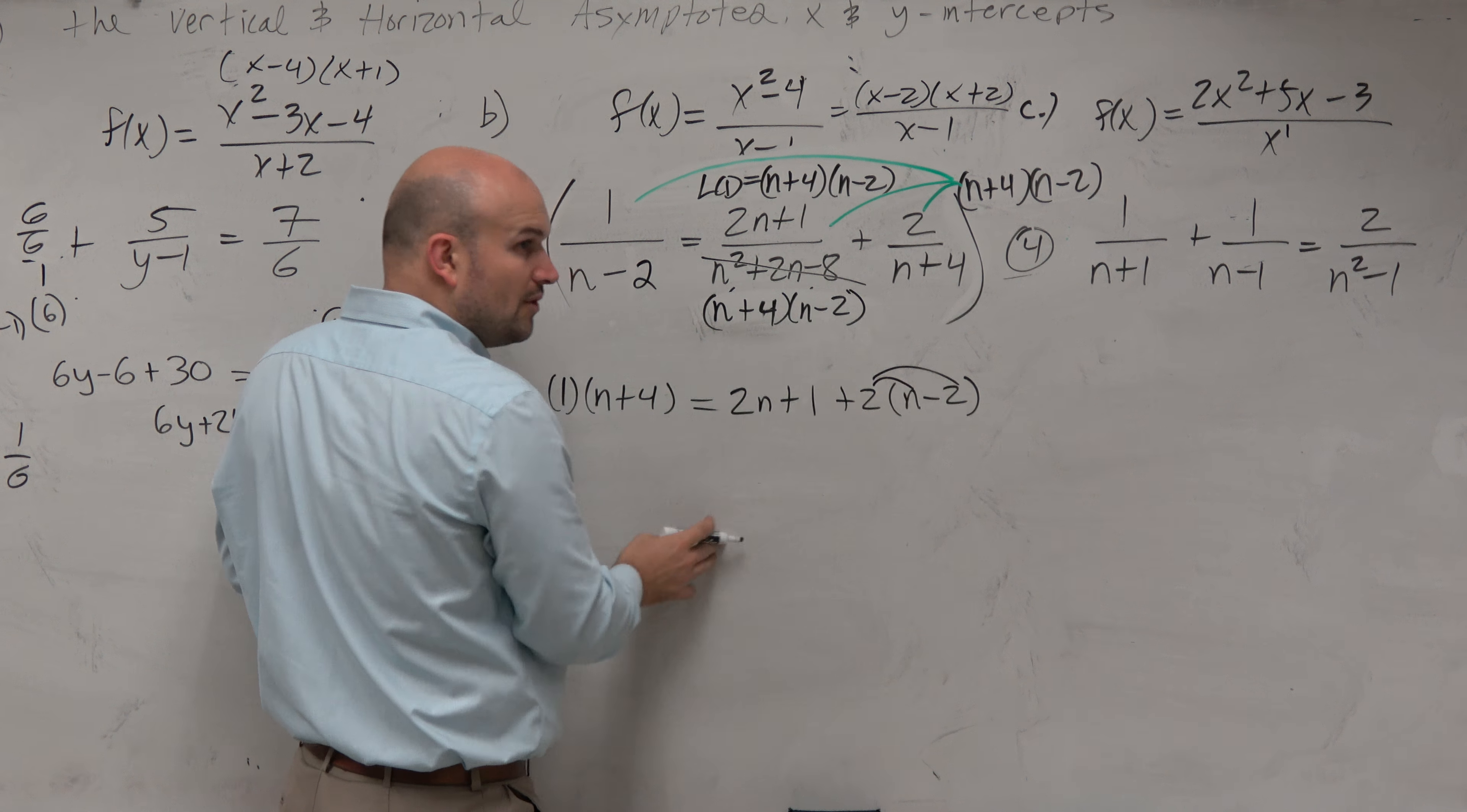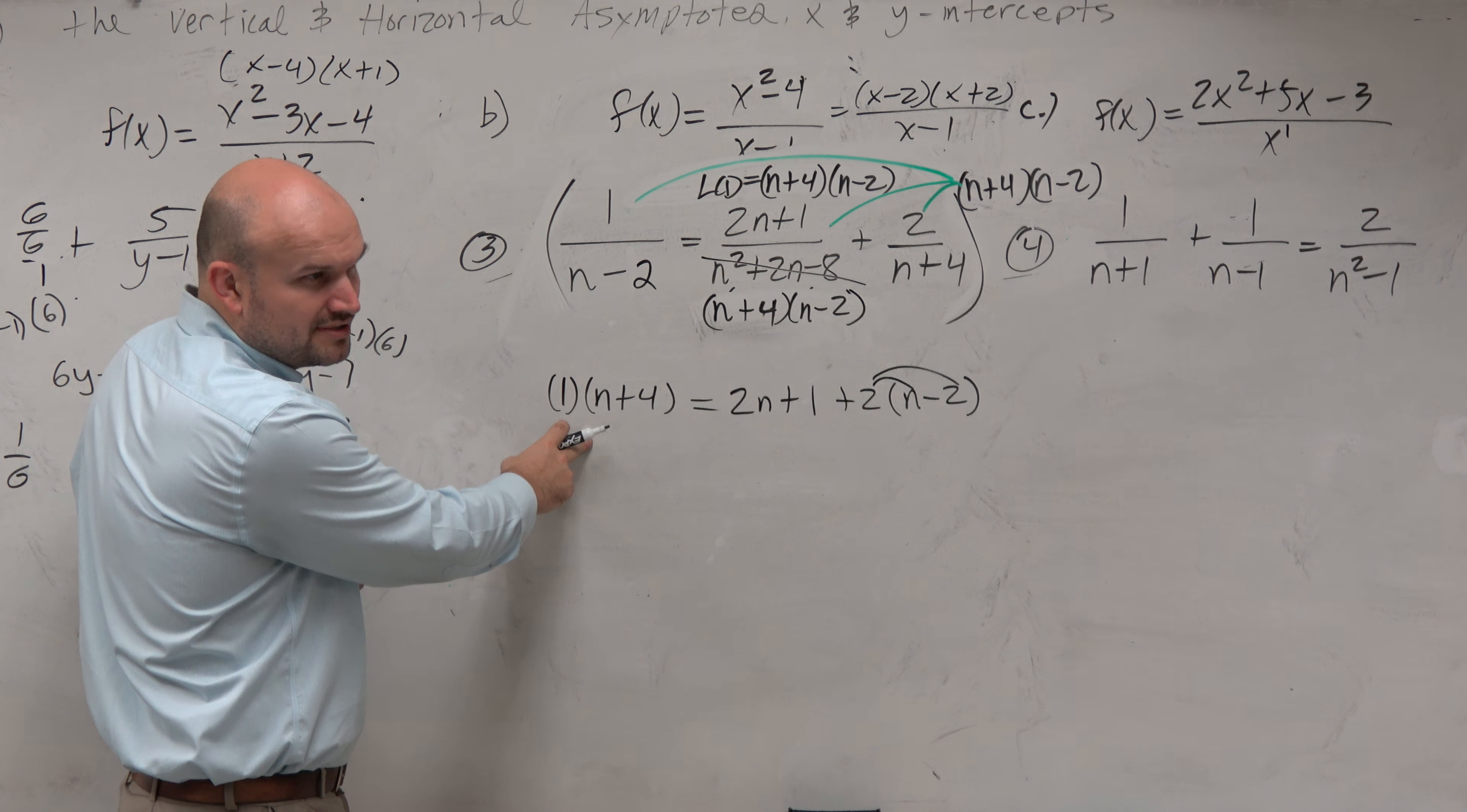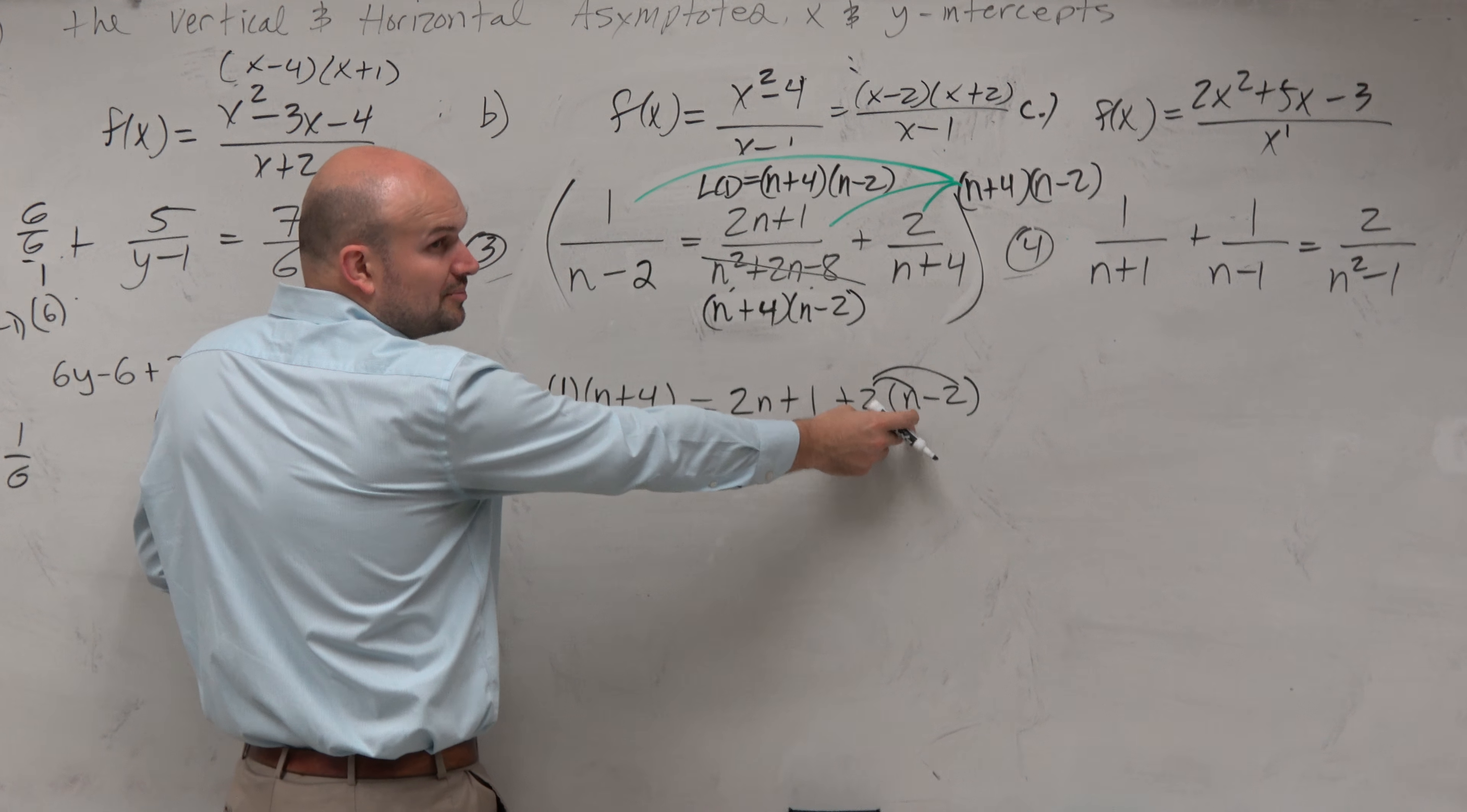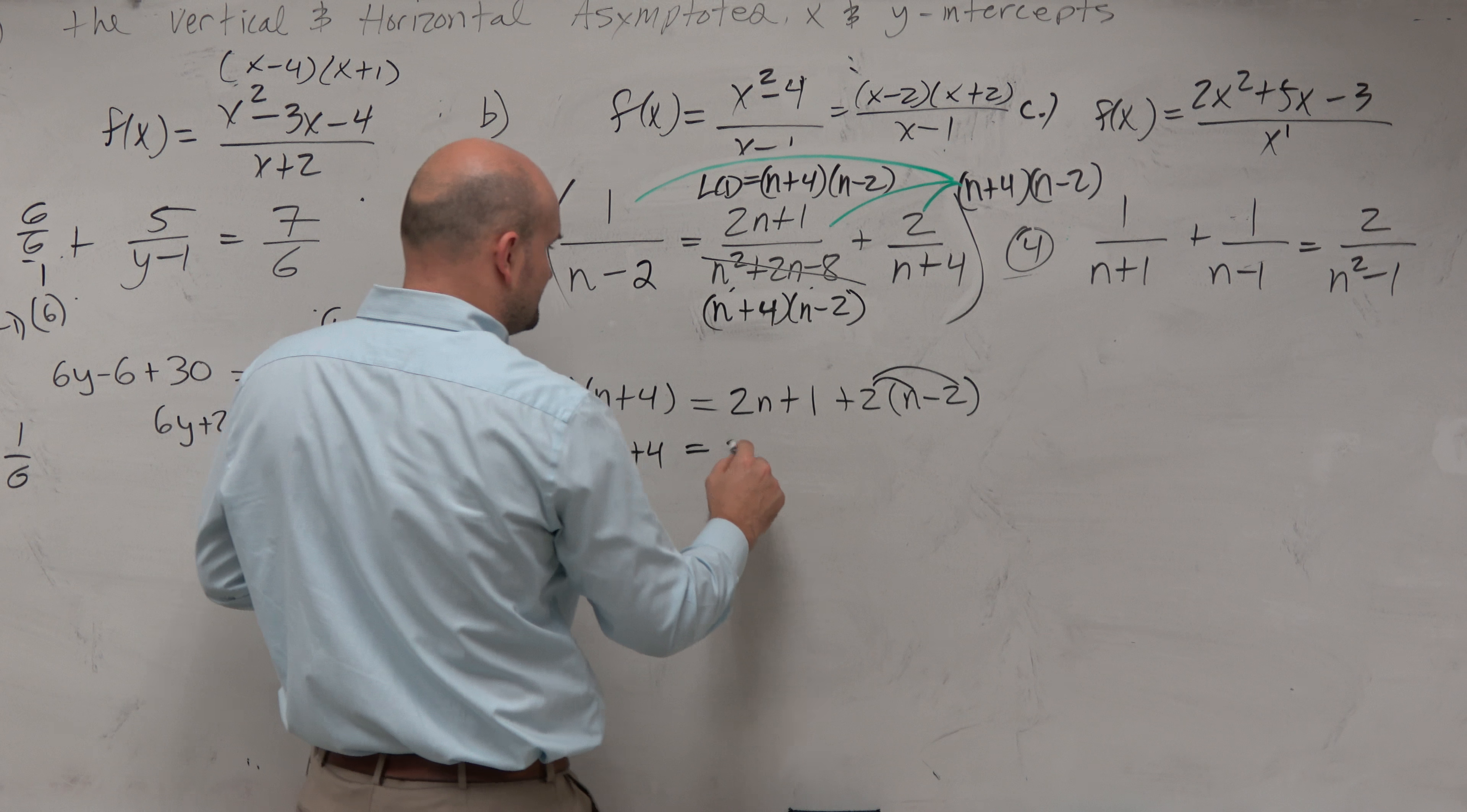If I multiply n plus 4 times n minus 2 times that whole expression, well, then you can see that these are just going to divide to 1, right? So it would be 2n plus 1. So we're just left with 2n plus 1.